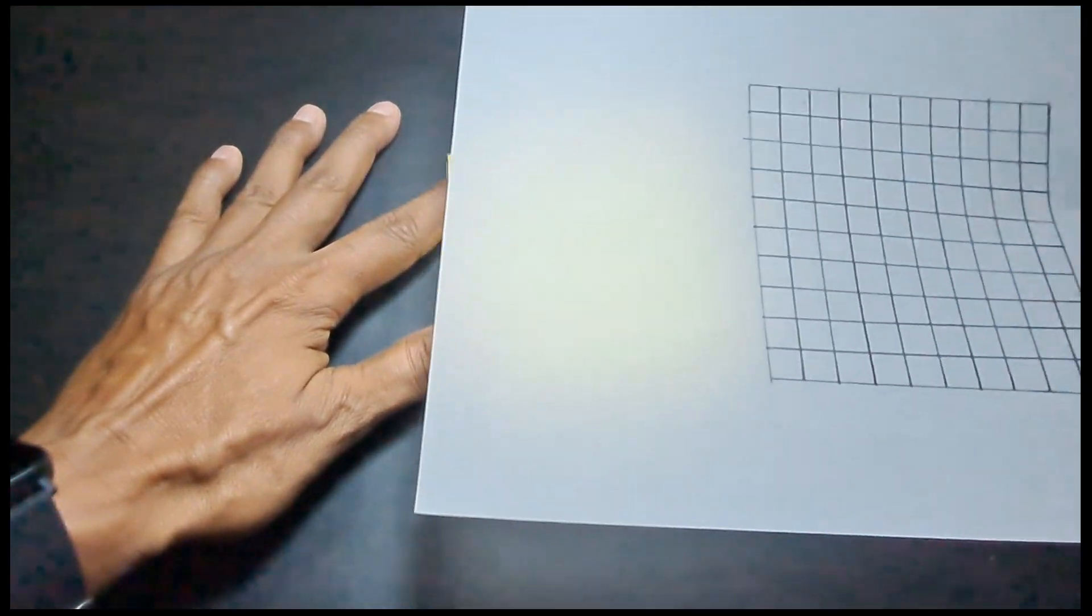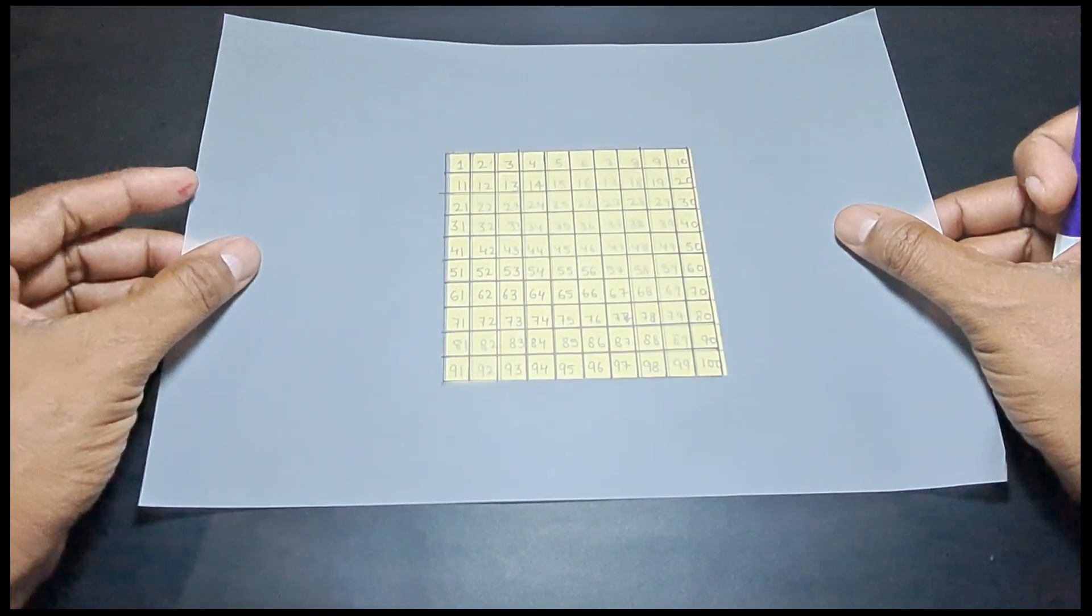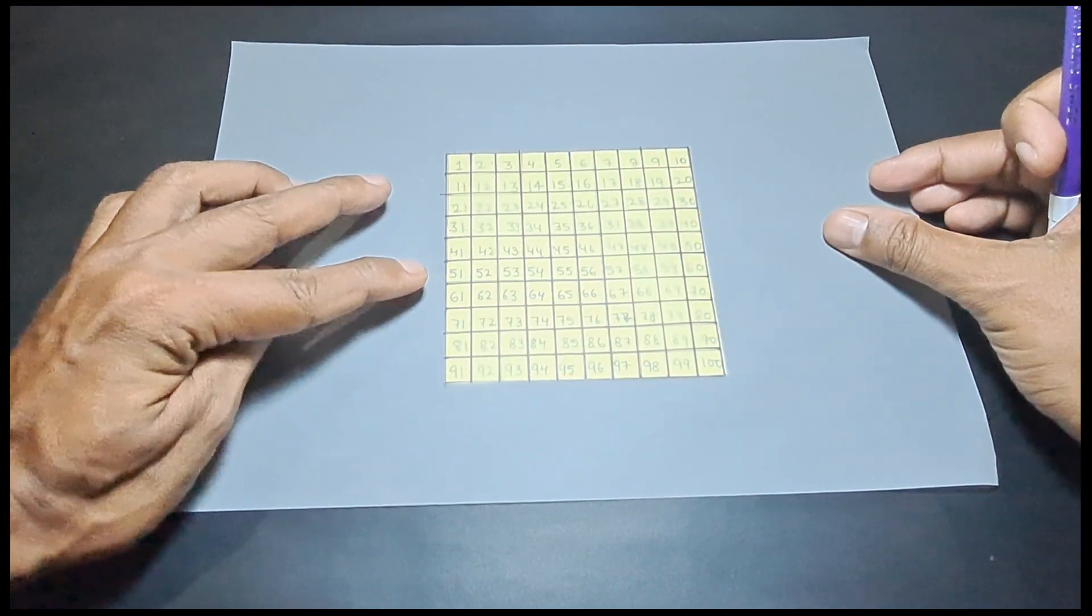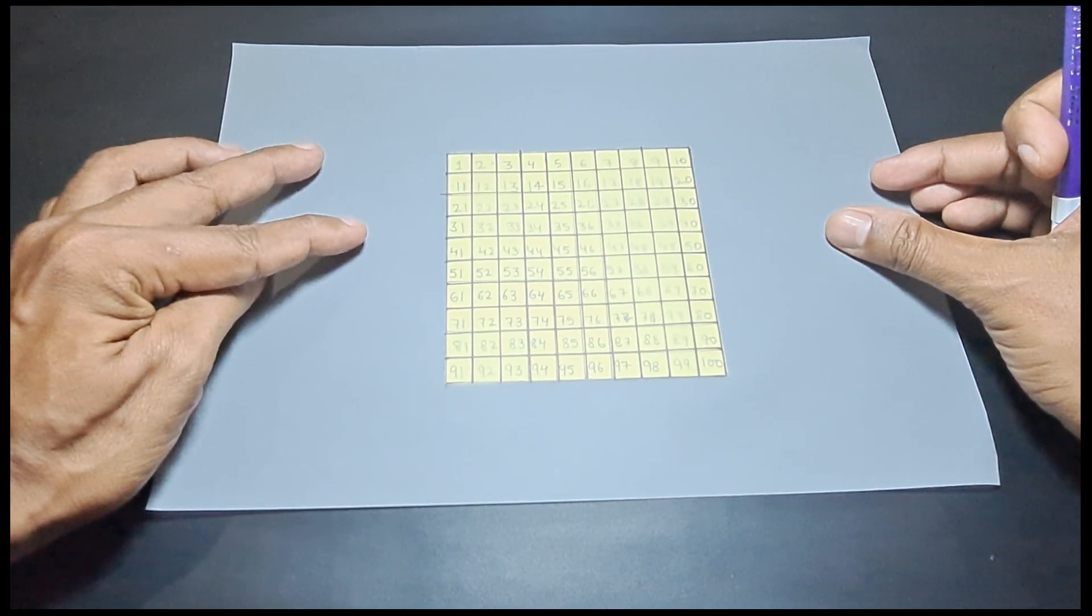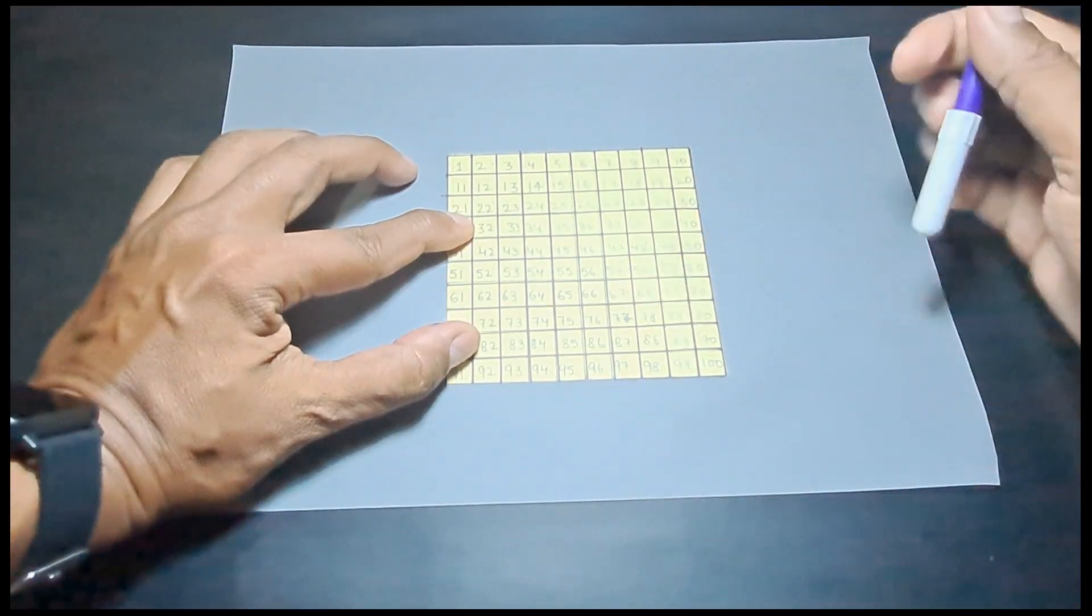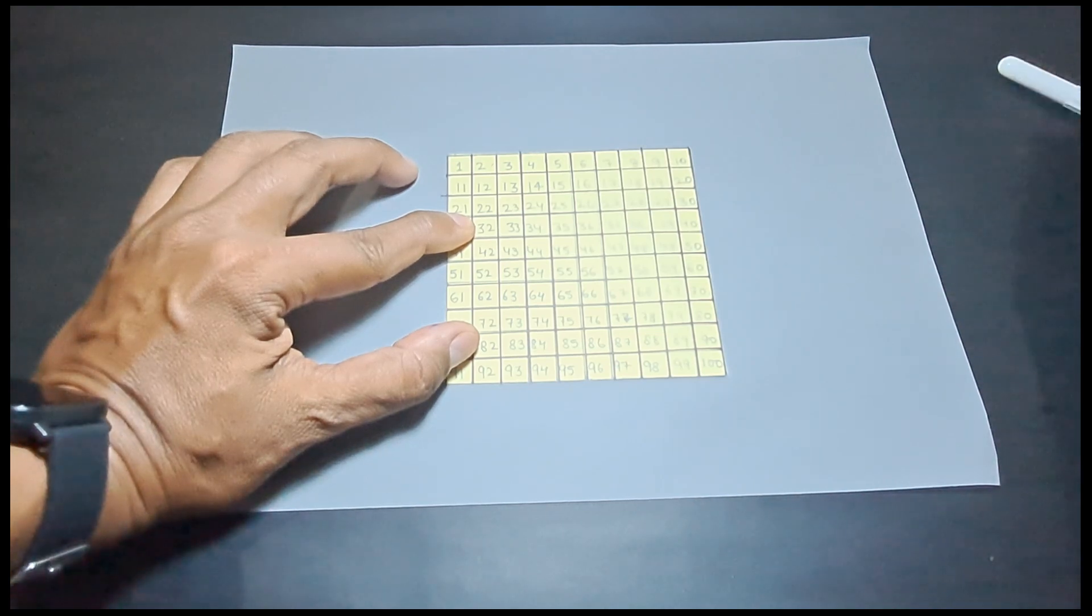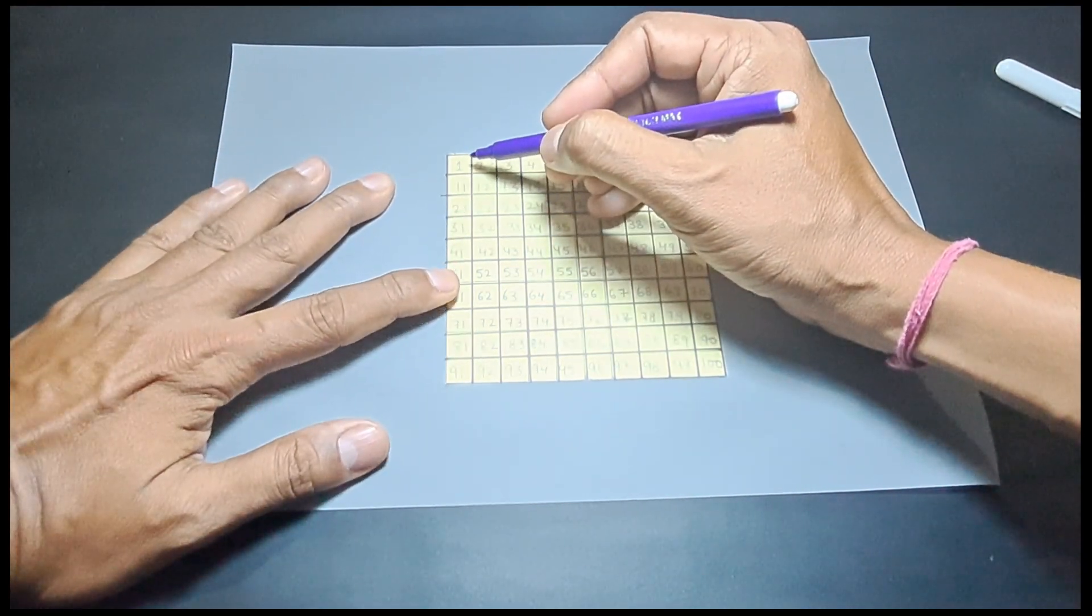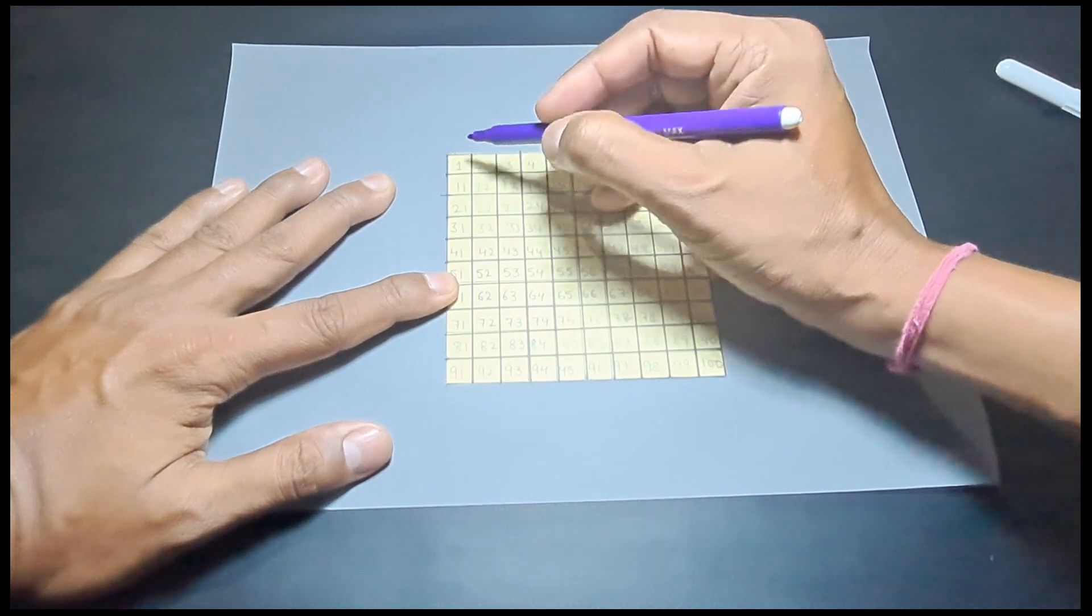Now, we will place it again so that it overlaps like this and now we will start striking out some of the numbers. The number 1 here is not a prime number. 1 is neither prime nor composite, so it is not a prime number.